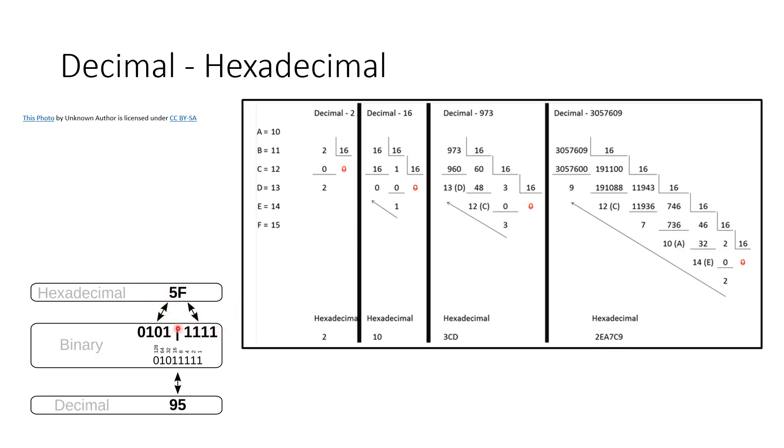When you have a binary number and you want to convert to hexadecimal, always divide the binary into four digits - four bits - and then translate it.